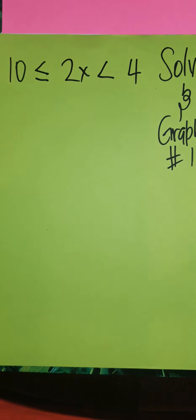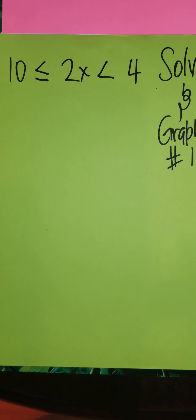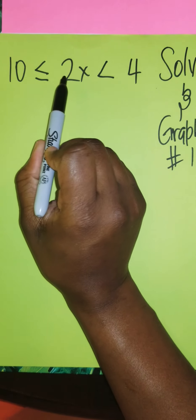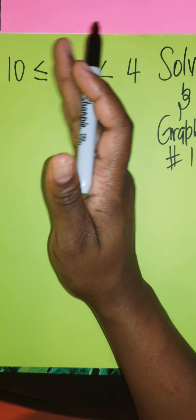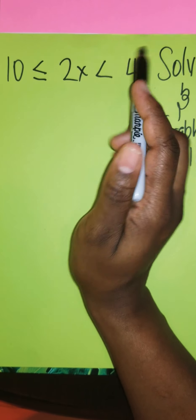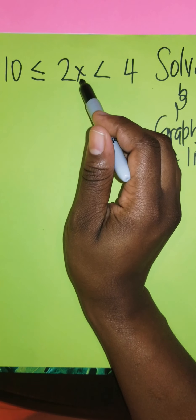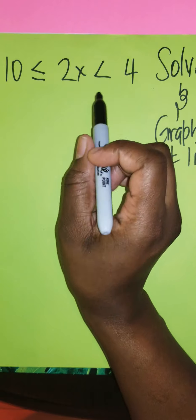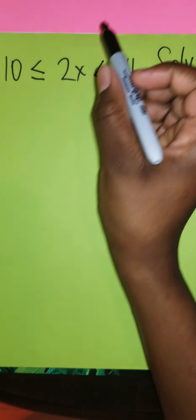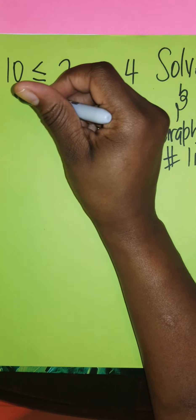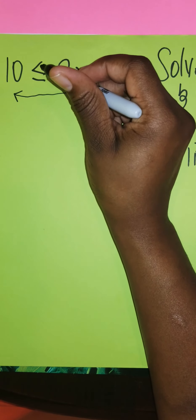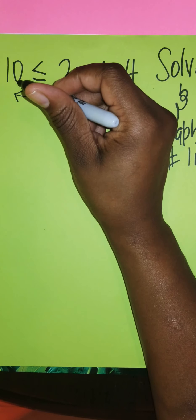With this compound inequality here, you see they have two regions, so we can read it twice. Normally you read it from the center to your left or to your right, and the center is where you normally have the unknown variable—could be anything from a to z. In this region it says 2x. I'm going to go this direction first. It says 2x is greater than or equal to 10 and 2x is less than 4.